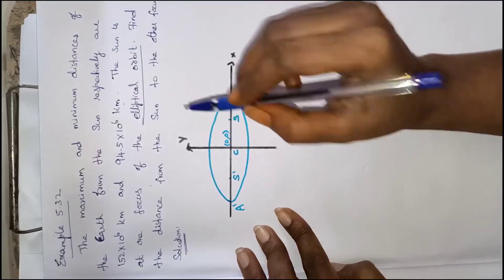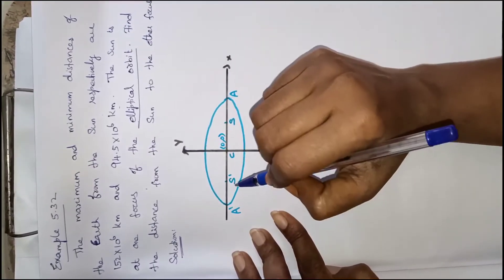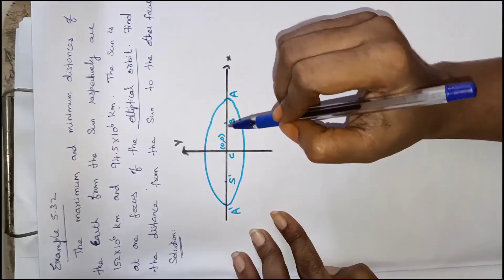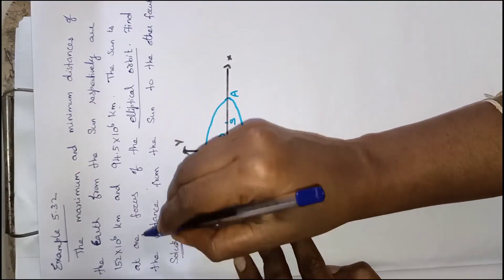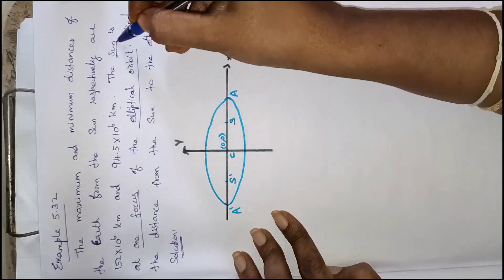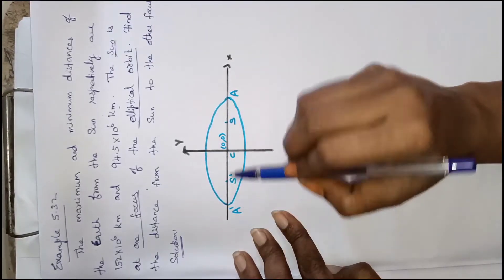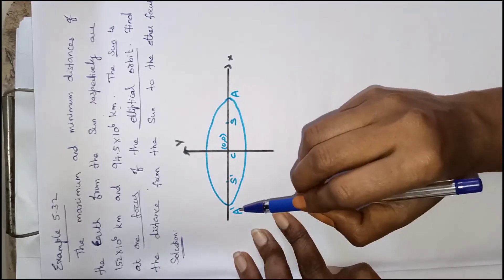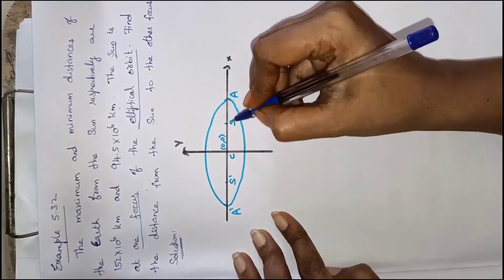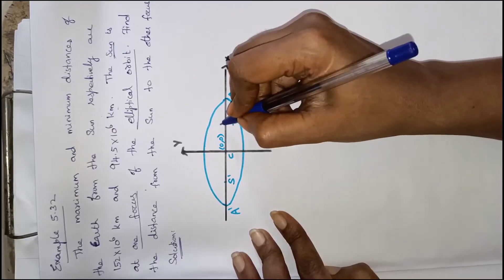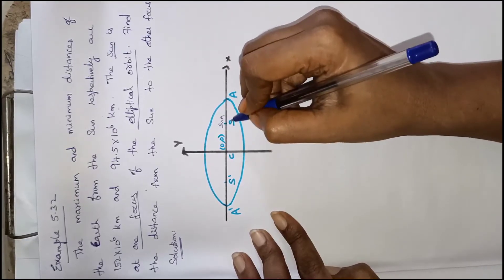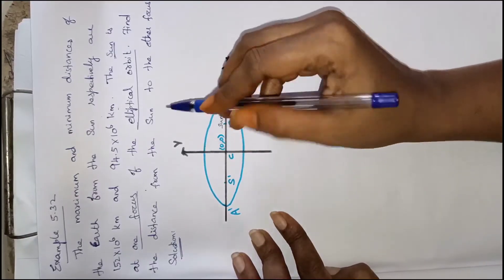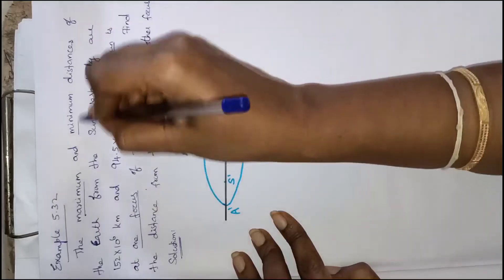The earth rotates in an elliptical orbit. The sun is placed at one focus of the ellipse. As the earth moves along the elliptical orbit, we get a maximum and minimum distance from the sun.